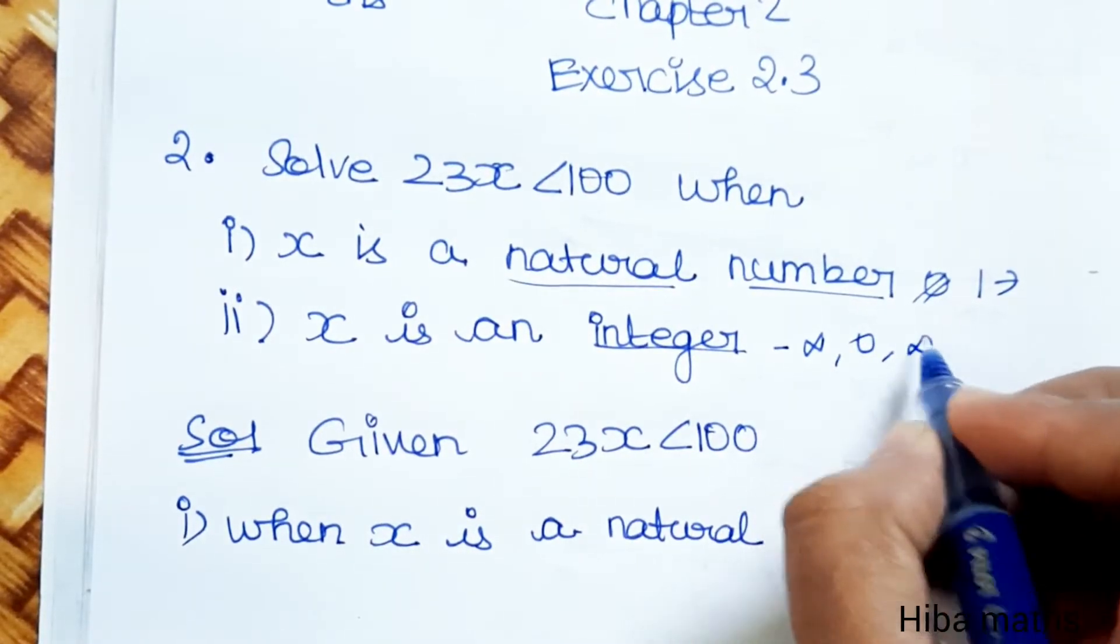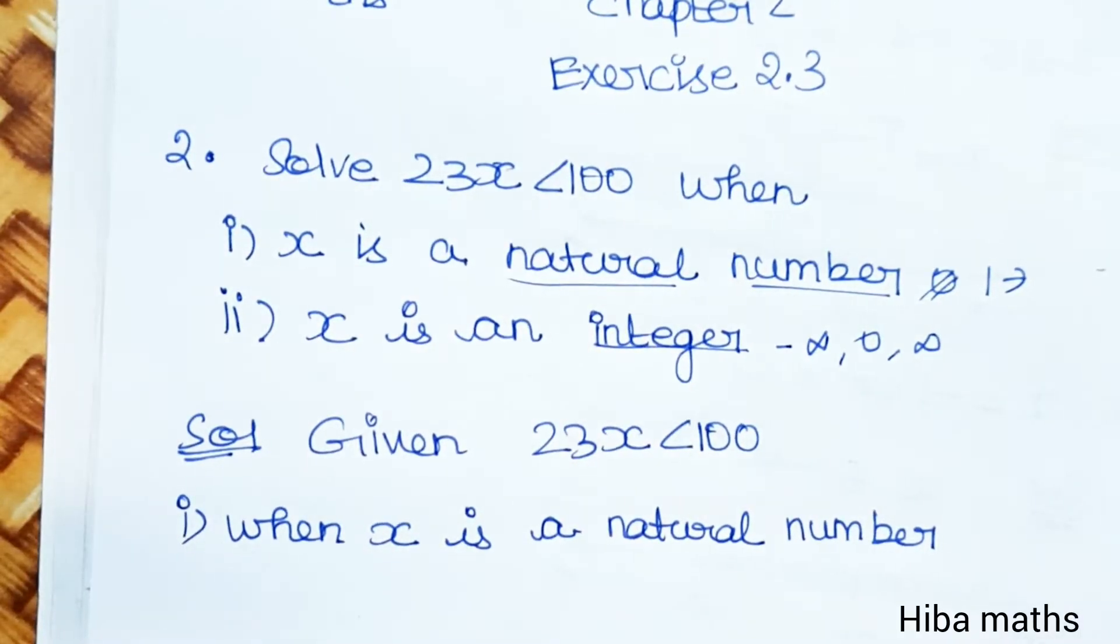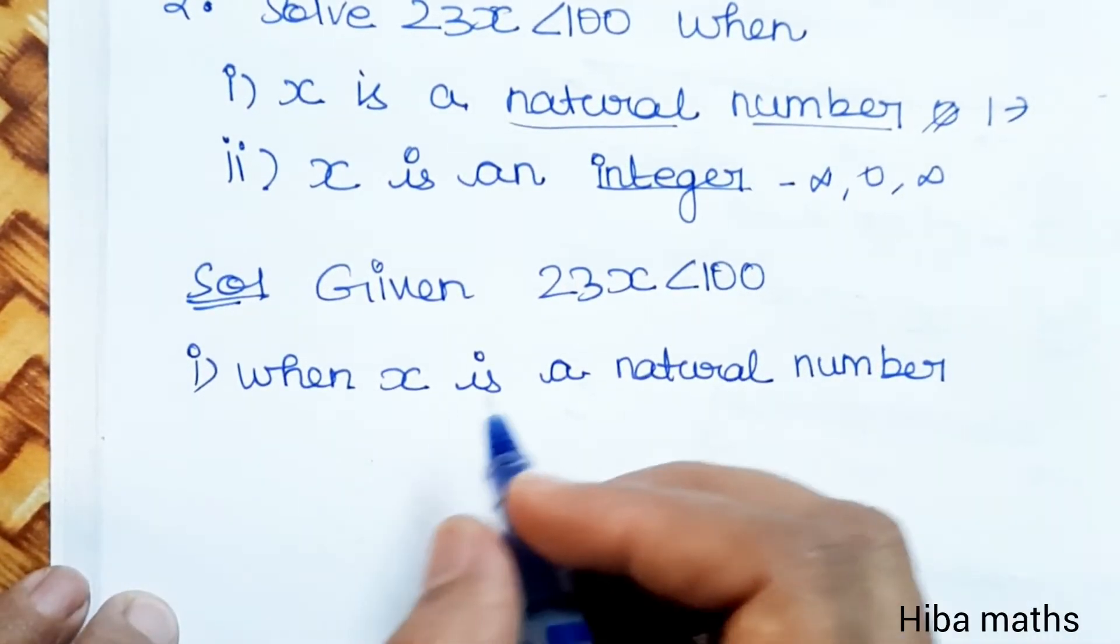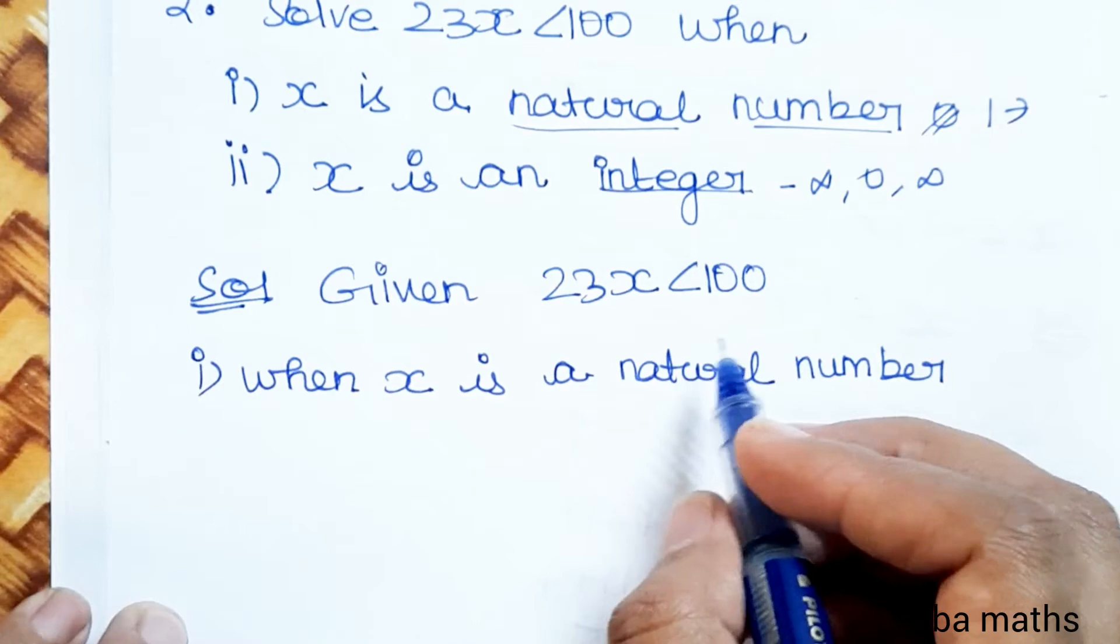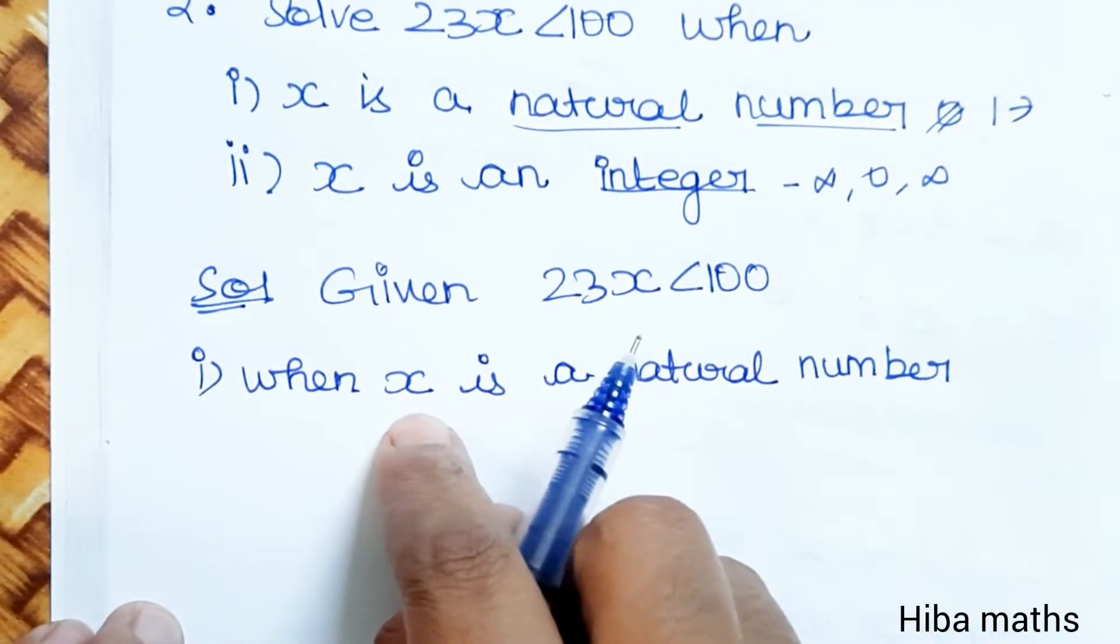Natural numbers start with positive numbers. Integers include negative numbers, zero, and positive numbers. This is the difference. We have the solution given: 23x less than 100 when x is a natural number.